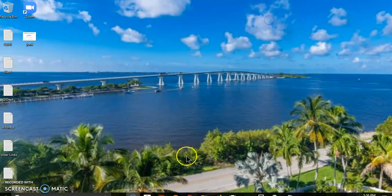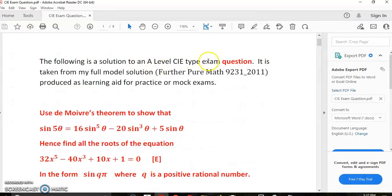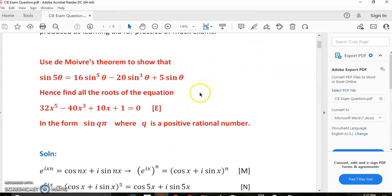So let's begin. I used to compile full A-level math exam solutions and the following is a solution to an exam that was given in 2011. It said use de Moivre's theorem to show that this expression is true, this equation is true, and then find all the roots of this equation in this form sin q pi where q is supposedly a positive rational number.